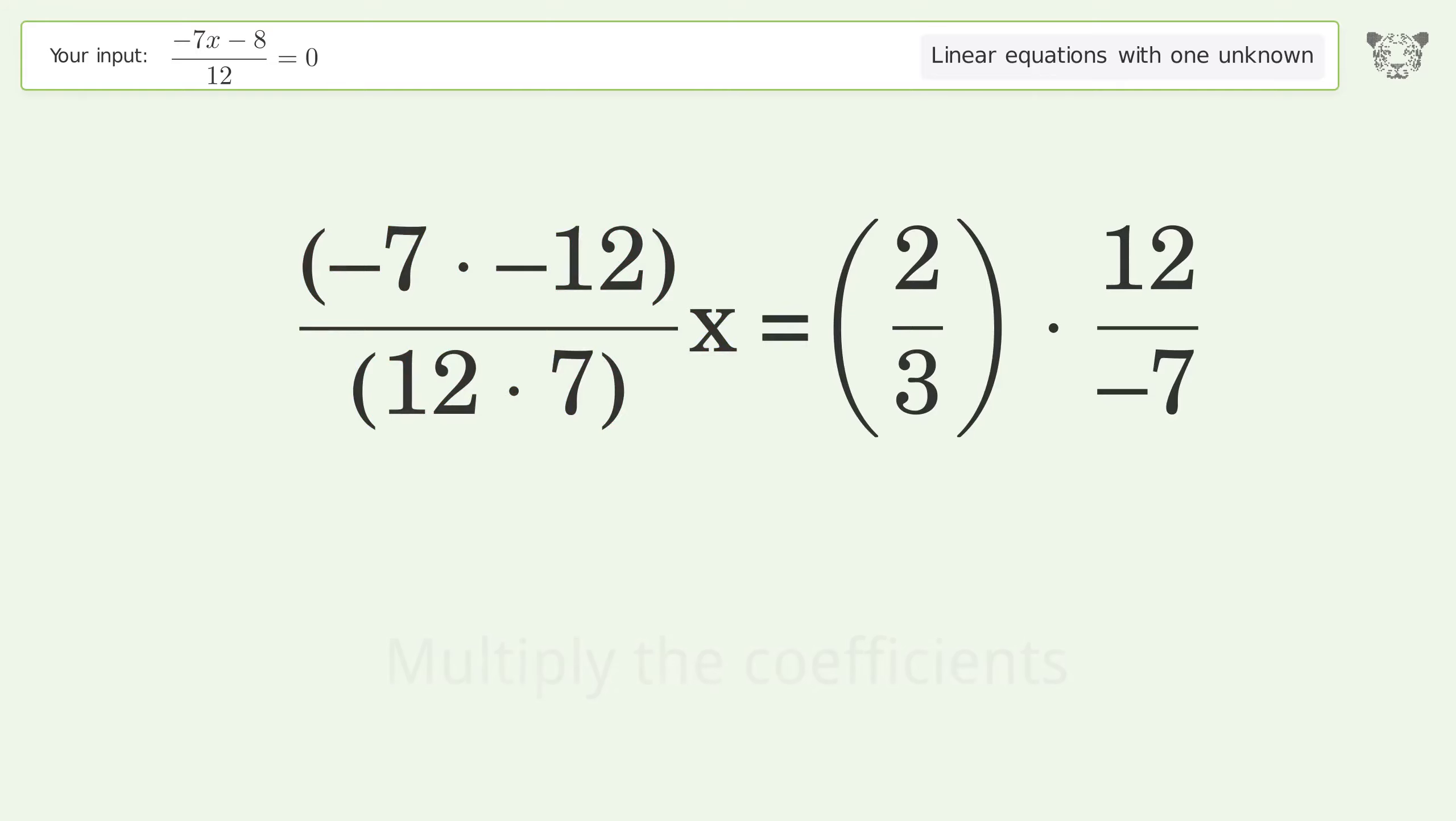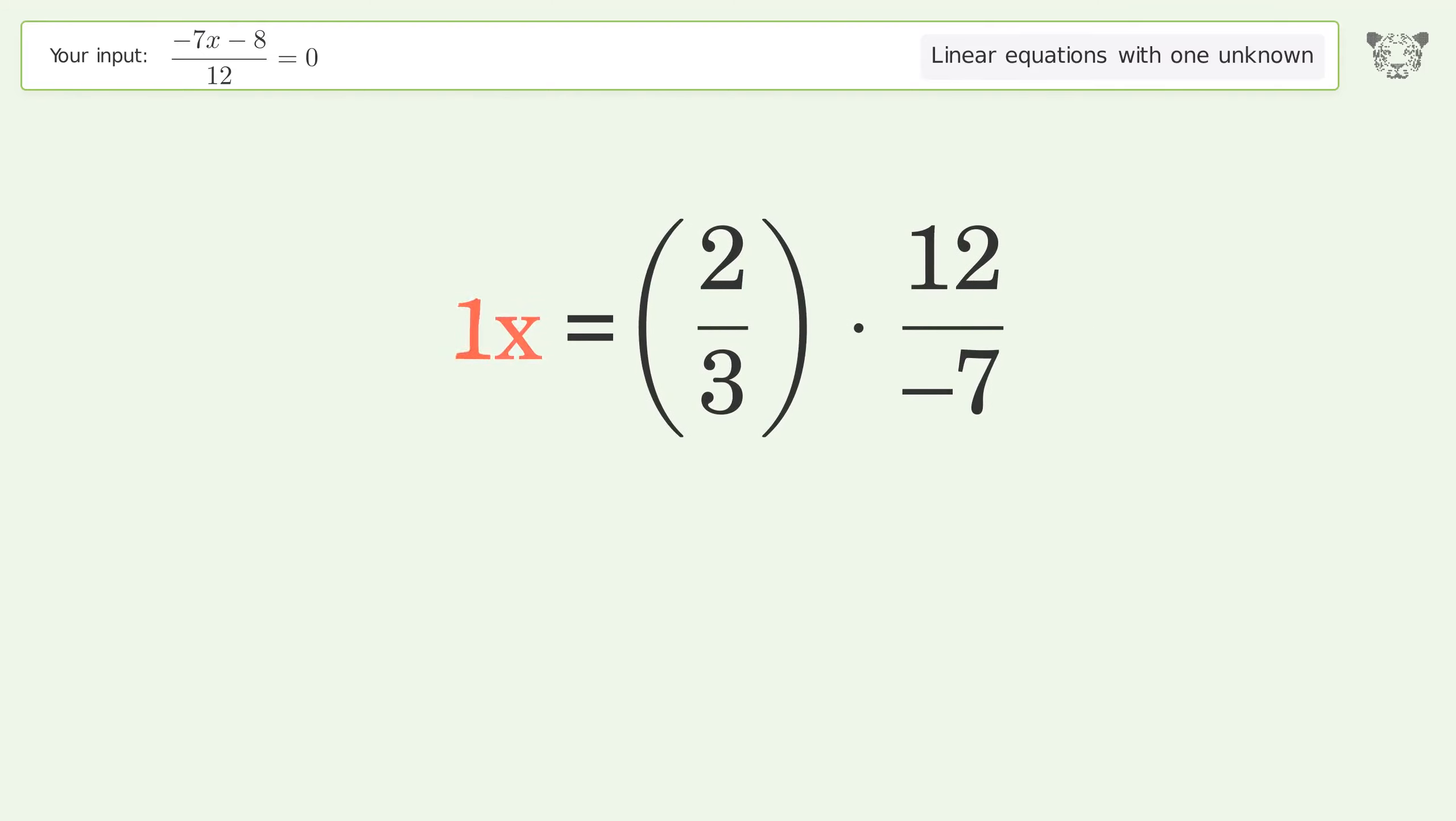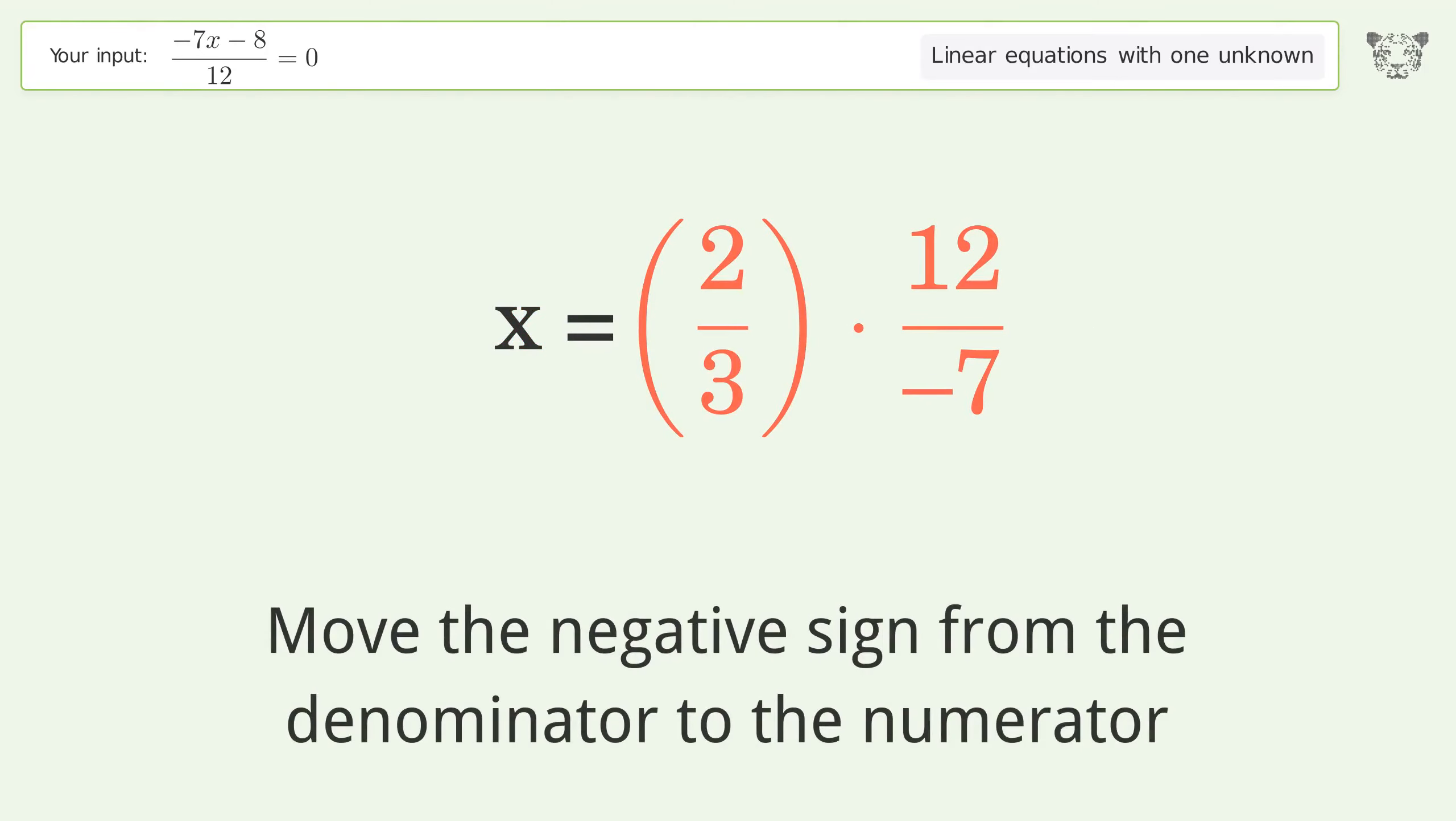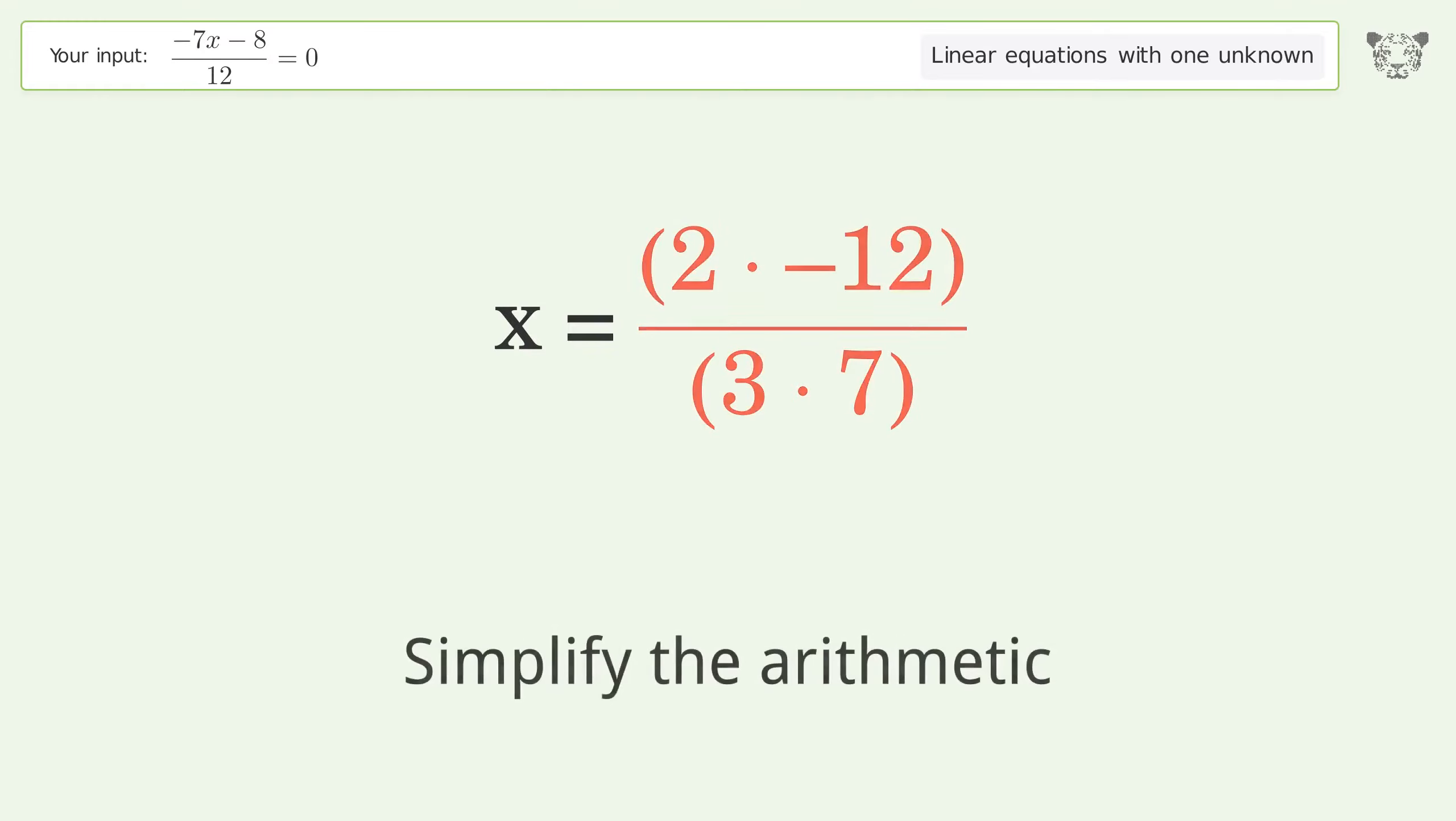Multiply the coefficients. Simplify the arithmetic. Move the negative sign from the denominator to the numerator. Multiply the fractions. Simplify the arithmetic. And so the final result is x equals negative 8 over 7.